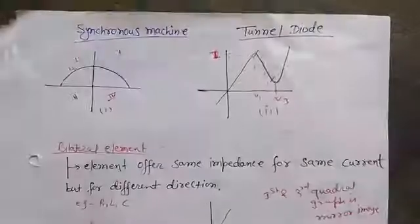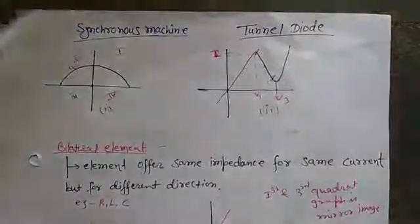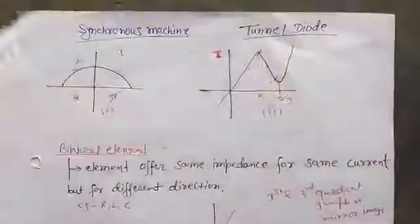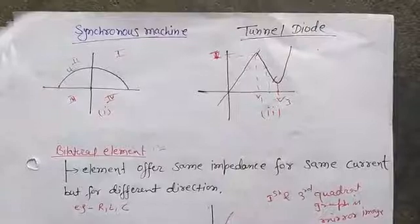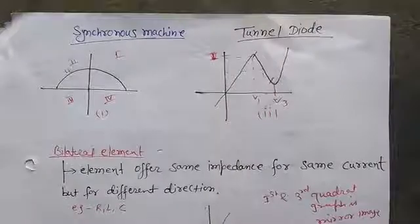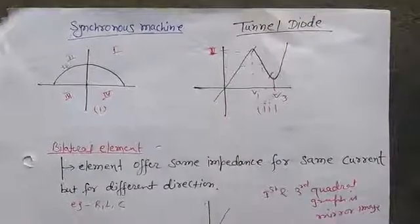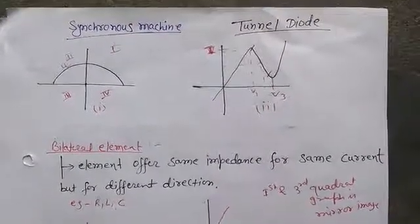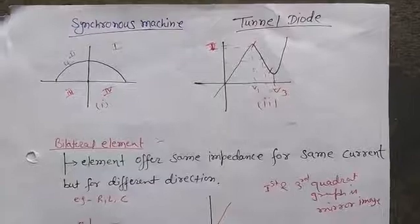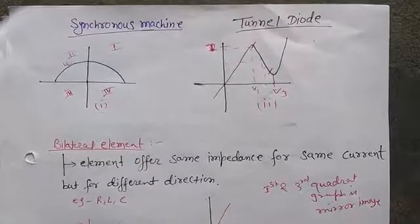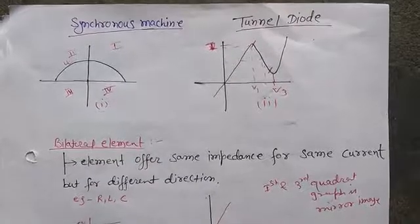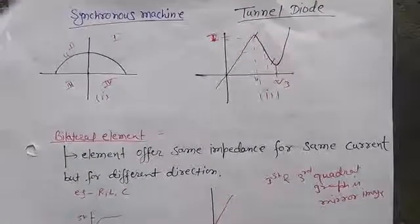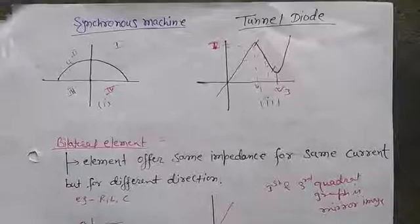In the previous video, we had studied about active and passive components. Today, we will learn about unilateral and bilateral elements. But before that, let's have a quick review of the previous lecture.